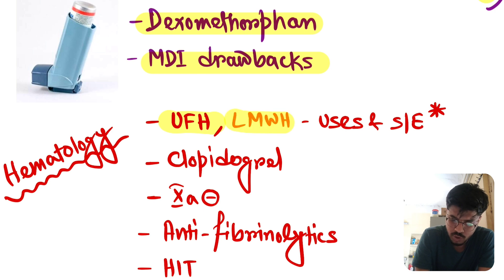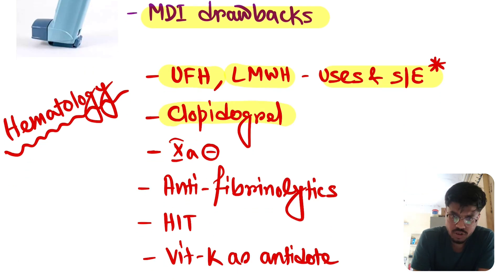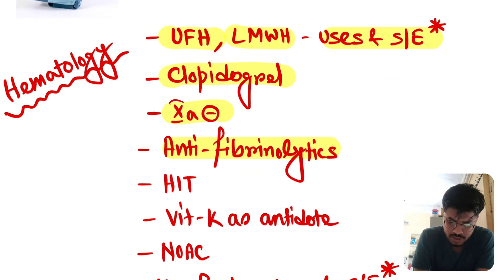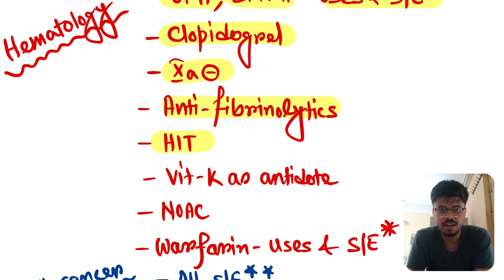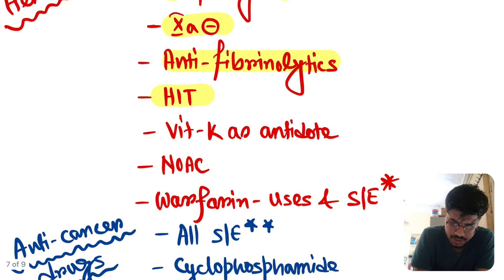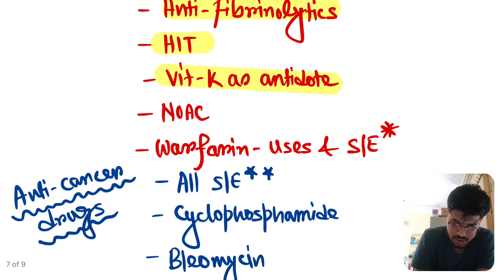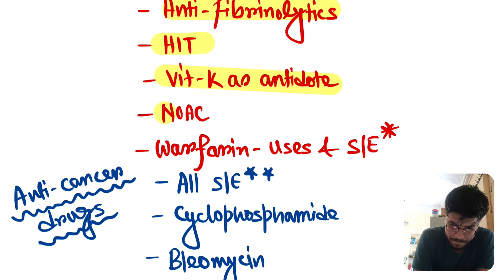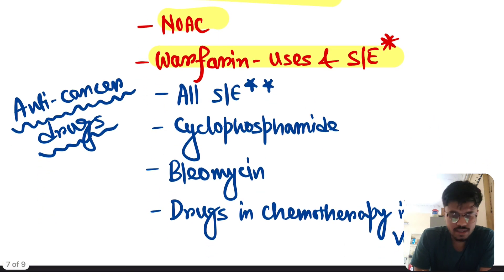In hematology, unfractionated heparin, LMWH. Uses and side effects. Repeatedly asked topics. You have to read in depth about this. Clopidogrel. Factor Xa inhibitors. Anti-fibrinolytics. Heparin-induced thrombocytopenia. Again important topic. Vitamin K as antidote. Repeatedly asked topic. Newer anticoagulant. Warfarin. Uses and side effects. Very very important topic. Every year, you can get a question from warfarin. Minimum one question.